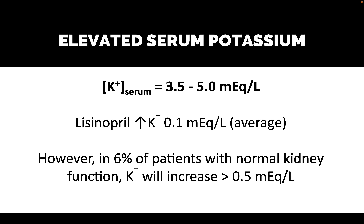Another big side effect with lisinopril is potassium — this may be the most important thing. Elevated serum potassium could go up, usually only by about 0.1 milliequivalents per liter on average. However, about 6% of people who take lisinopril with normal kidney function will experience a greater increase in their potassium level, and that number goes up if kidney function is impaired. So your doctor needs to monitor your electrolyte and potassium levels.